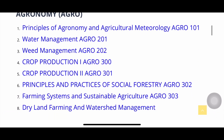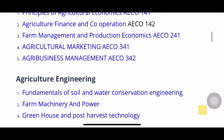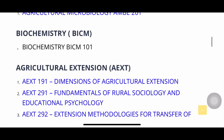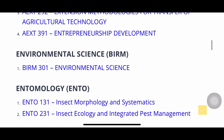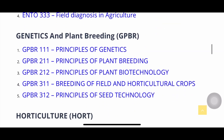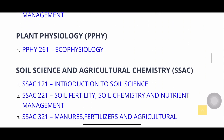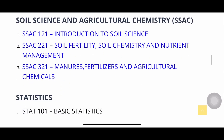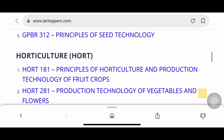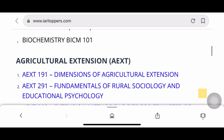For agronomy courses, there are eight courses. Other subjects include Agricultural Economics, Agricultural Engineering, Agricultural Microbiology, Agricultural Extension, Environmental Science, Entomology, Genetics and Plant Breeding, Horticulture, Plant Pathology, Plant Physiology, Soil Science and Agricultural Chemistry, and Statistics. These courses also help you prepare for competitive examinations if you don't have the books.